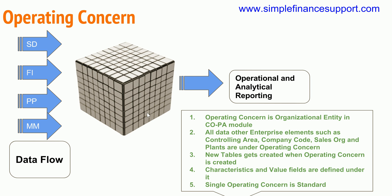In other sessions I will cover characteristics and value fields and how they are defined in the operating concern. In this session, let's focus on the operating concern itself. Having one single operating concern is the standard. You have an option for one operating concern per company code or per controlling area, but in practice you don't need separate operating concerns by legal entity — you can collapse all data into one operating concern to analyze across all business entities.